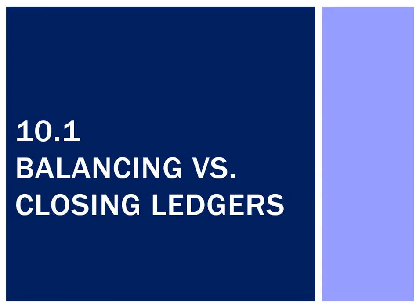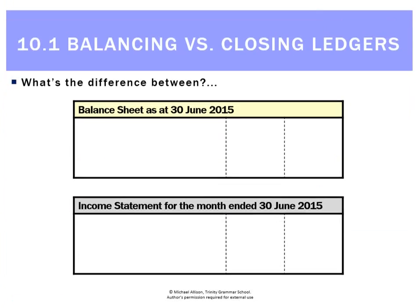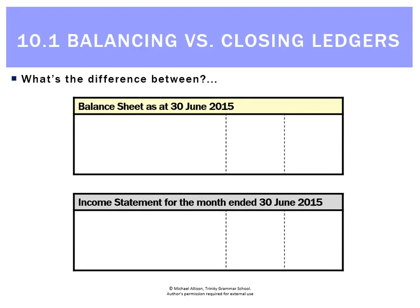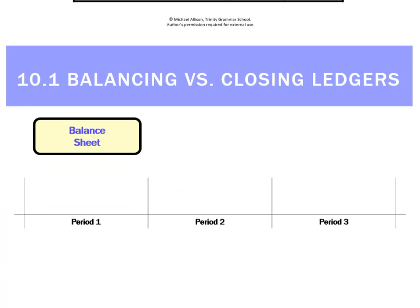Let's look at the difference between balancing and closing a ledger. Looking at the balance sheet, you can see it says the balance sheet is prepared 'as at' — in this case, the 30th of June — whereas the income statement is 'for the month ended 30th of June.' So there's a slight difference there. We want to figure out what that difference is and what it's got to do with balancing and closing.